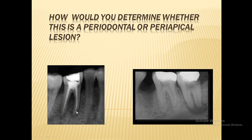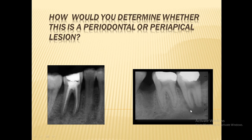In the case of a periodontal lesion, the vitality test is positive — the tooth is vital. You will find radiolucency around the root, but the pulp is vital. In the case of a periapical lesion, the pulp is dead — the vitality test is negative, meaning the tooth is not vital due to the periapical lesion. The radiolucency in the periodontal lesion is around the root in the periodontal ligament.